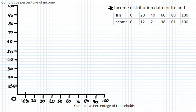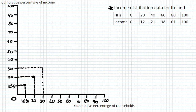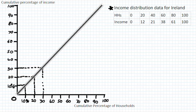For perfect equality, the first 10% of households measured by income would hold 10% of the wealth, giving us a point on our absolute equality line. Moving up to 20% of households, they would also hold 20% of the wealth — equal proportions. At 30% of households, they would hold 30% of the wealth. This equal distribution gives us points on our line of absolute equality, which continues all the way up.